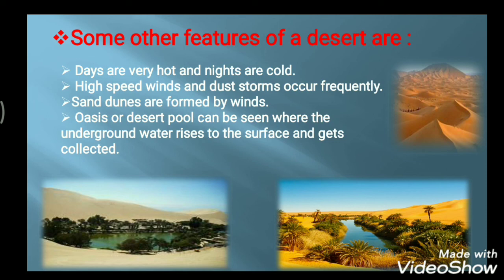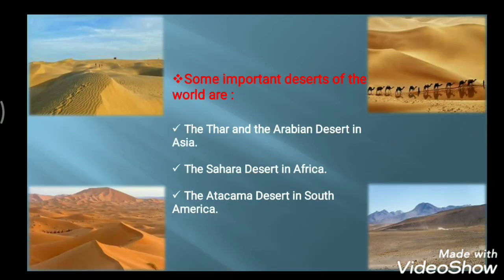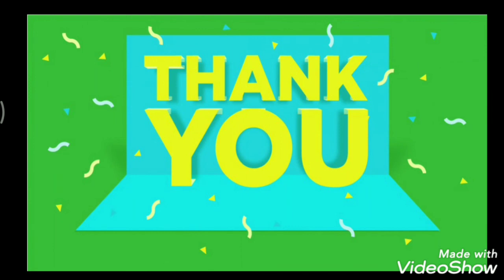Now let's look at some important deserts of the world. In Asia, we have the Thar Desert, also known as the Great Indian Desert, and the Arabian Desert. In Africa, there is the Sahara Desert, the largest in the world. In South America, there is the Atacama Desert. These are the important deserts of the world. That's it for now — I hope this session helped you. See you in the next session, bye bye.